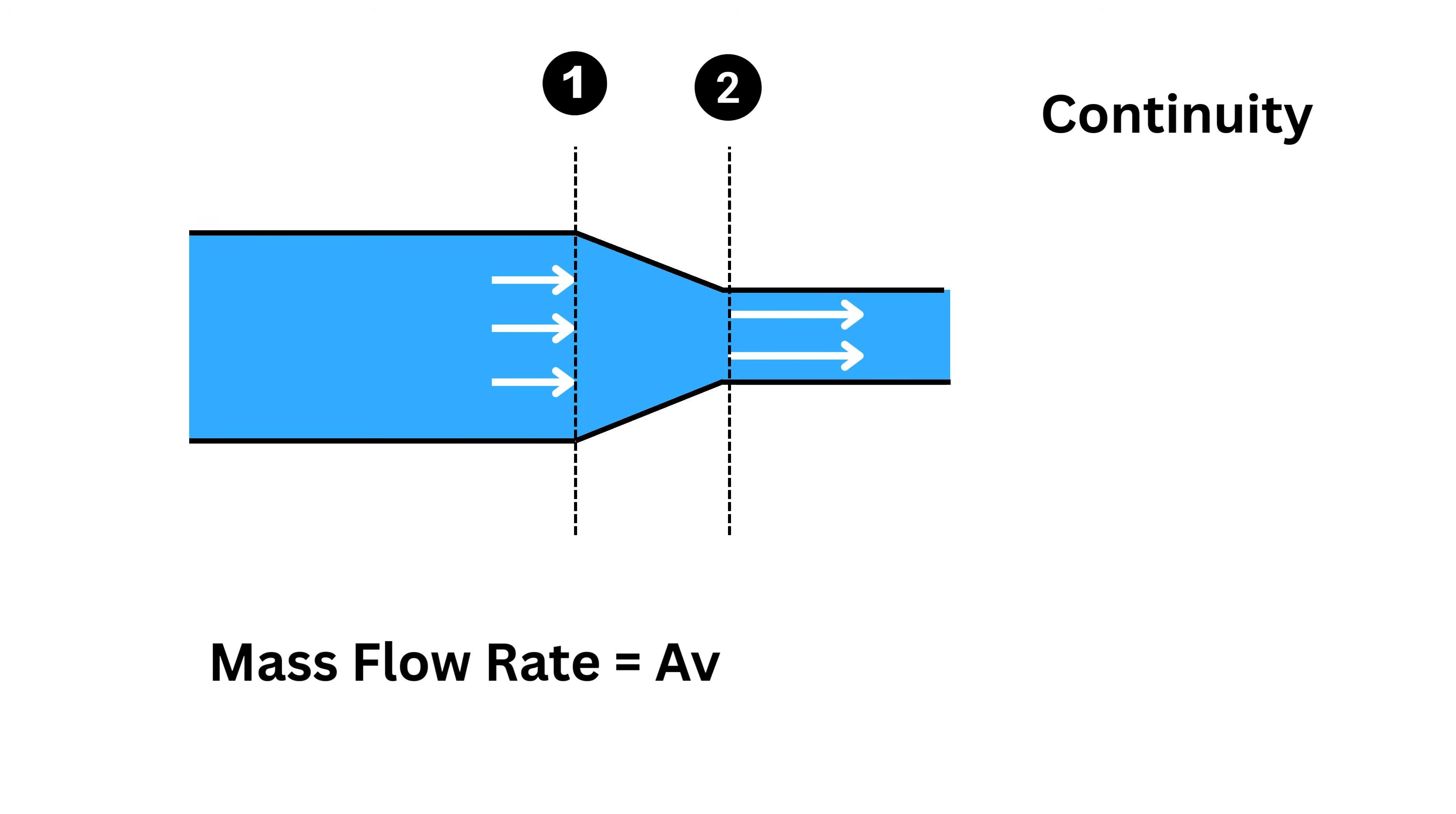So at any two points in the pipe, if the fluid is steady and not leaking anywhere, then the area at point 1 times the velocity at point 1 must be equal to the area at point 2 times the velocity at point 2. If the area becomes smaller, the velocity must become larger to keep the product the same. That's why fluid speeds up in narrower parts of the pipe.